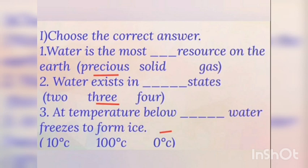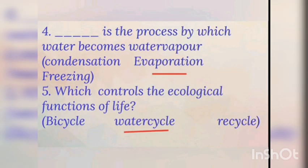Choose the correct answer. First one: water is the most precious resource on the earth - the answer is precious (P-R-E-C-I-O-U-S). Second one: water exists in how many states? Three states - solid, liquid, and gaseous state. Third one: at temperature below zero degrees centigrade, water freezes to form ice. Fourth one: evaporation (E-V-A-P-O-R-A-T-I-O-N) is the process by which water becomes water vapor. Fifth one: water cycle controls the ecological functions of life.